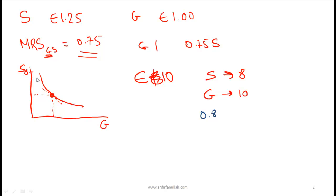So notice that the slope of the line is more than the 0.75 slope over here. So the slope of the budget constraint line, I'll just draw it like this. So this is 10. This slope is 0.8.